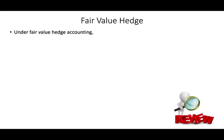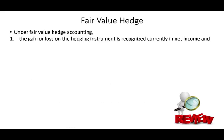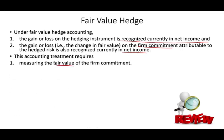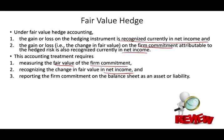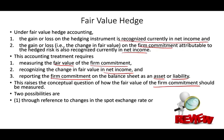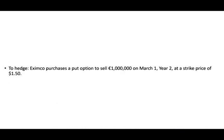Before we go over the example, let's make sure we understand how fair value hedging works. The gain or loss of the hedging instrument is recognized in net income, and the gain or loss of the firm commitment is also recognized in net income — everything goes to net income. The accounting treatment requires measuring the fair value of the firm commitment, recognizing the change in fair value in net income, and reporting the firm commitment on the balance sheet as either an asset or liability. You can measure fair value using either the spot rate or the forward rate.